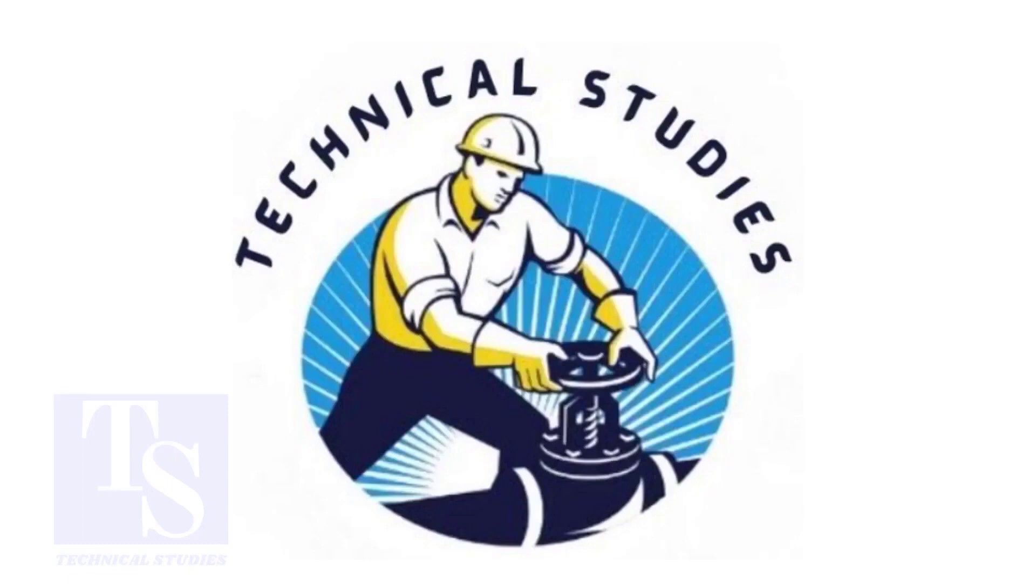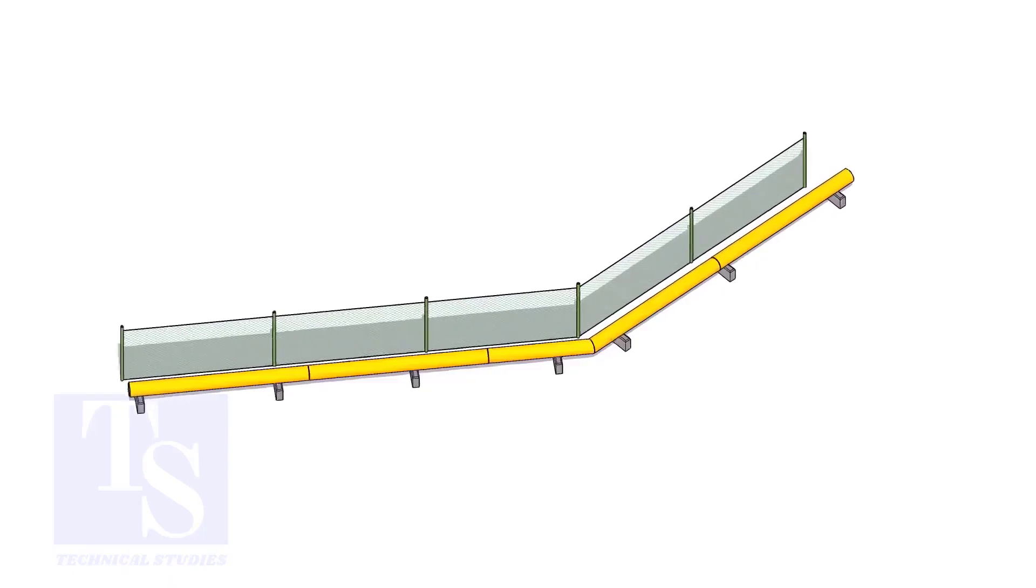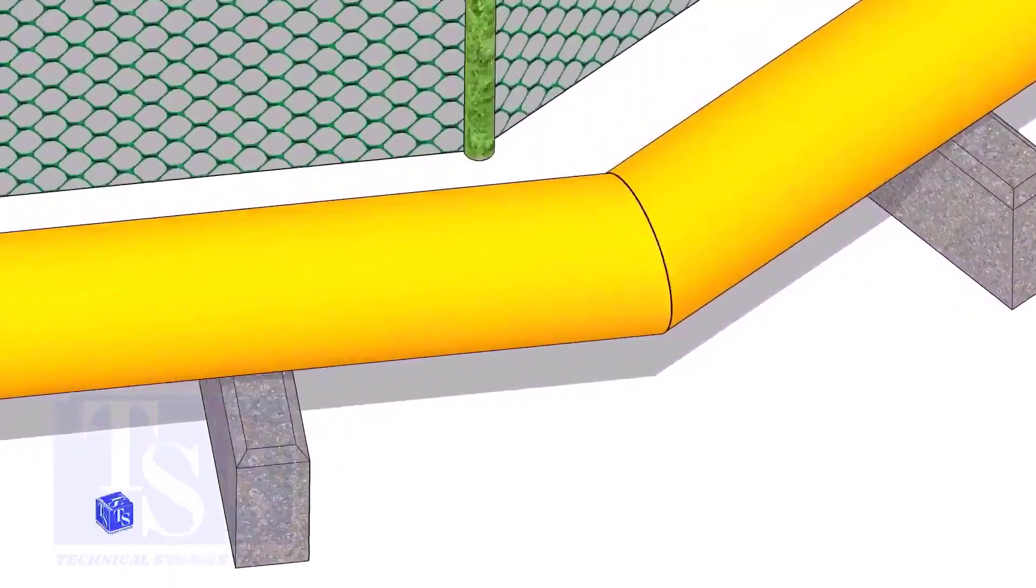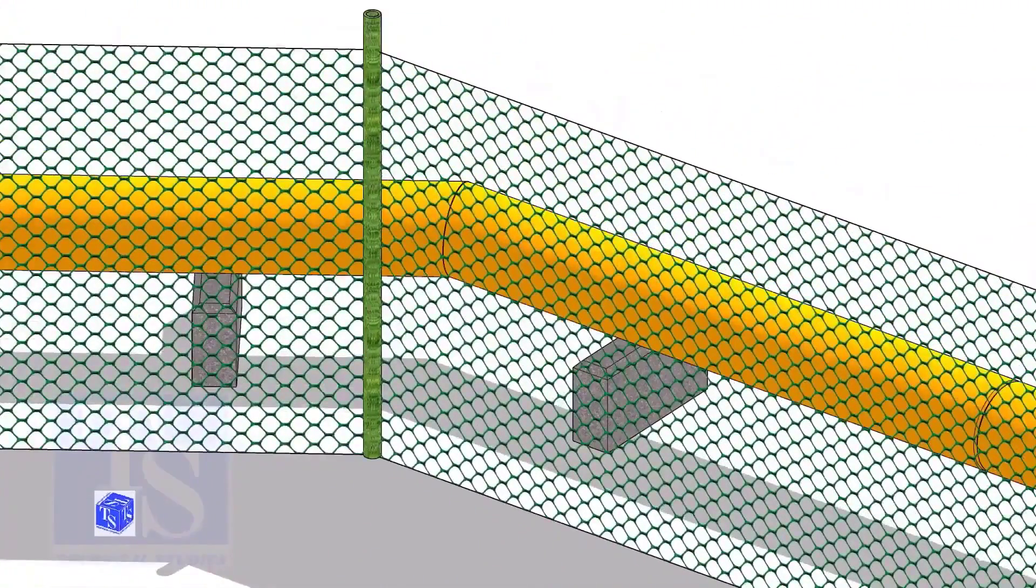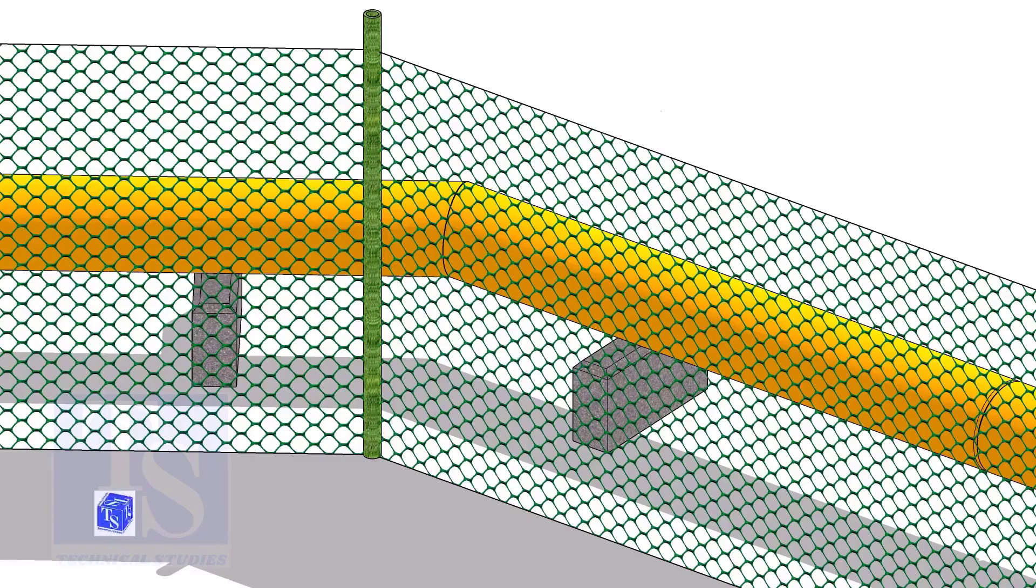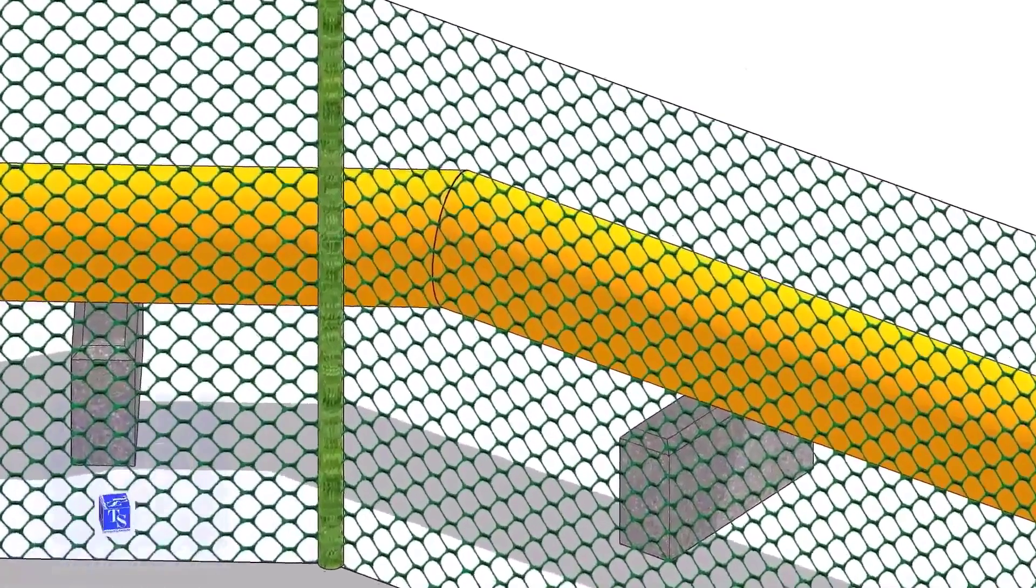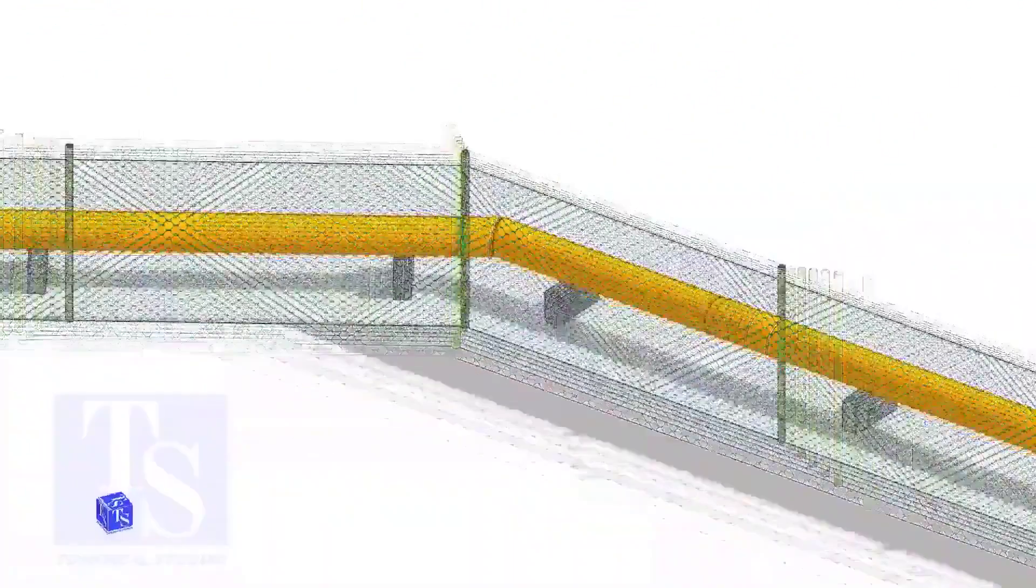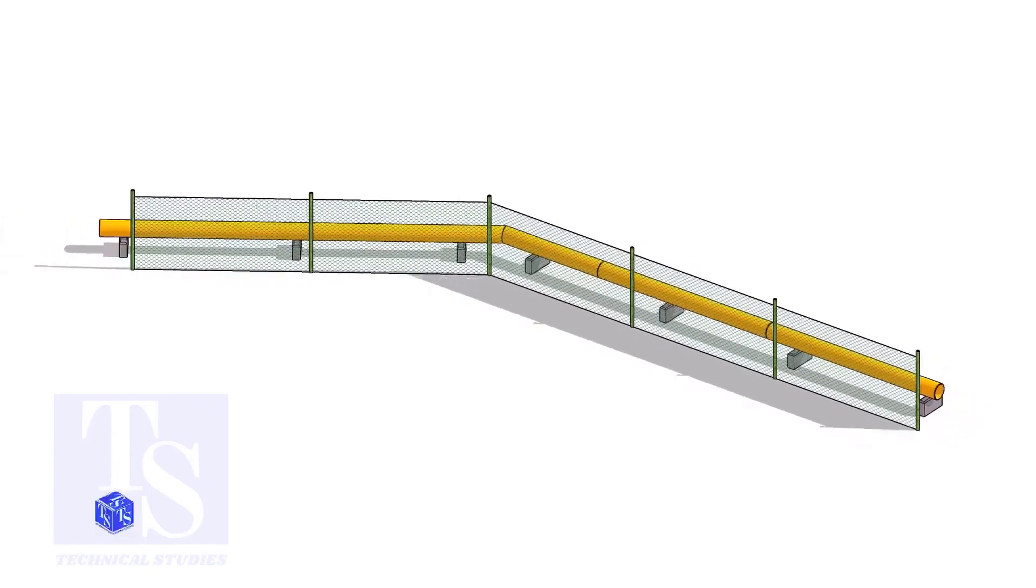Welcome to Technical Studies. Recently, one of the viewers told me he needs to make a pipeline around the fencing of a large plant for water supply. But he has a problem. The fencing has several turns. He wants to know how to make miter cuts on the spot. He asked me how to find the miter cutback easily.